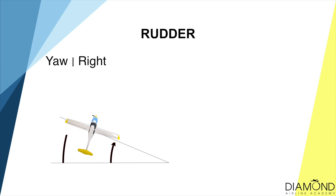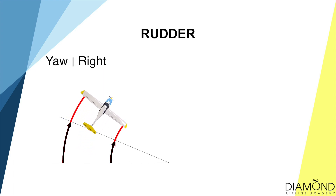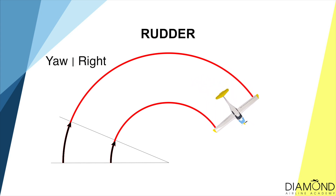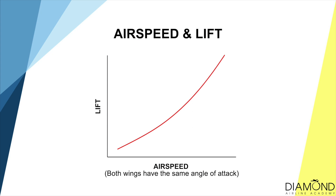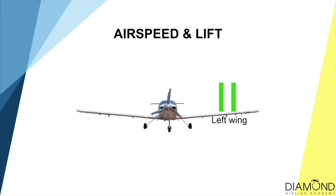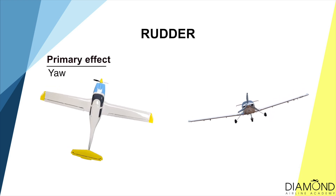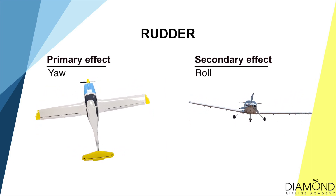Imagine an aircraft that is yawing to the right. If you look at the wingtips on either side, you'll see they are travelling at different speeds. The left wingtip is creating a bigger circle than the right, so it covers more distance in the same amount of time — meaning the left wingtip moves faster. Since speed and lift are positively proportional, the left wingtip will produce more lift than the right, which leads the airplane to roll to the right. That's why the secondary effect of yaw is roll.